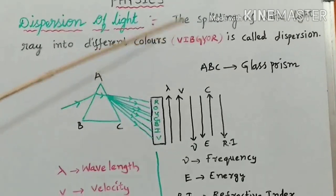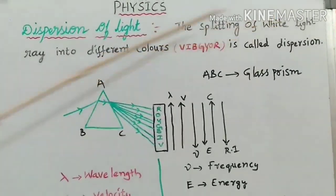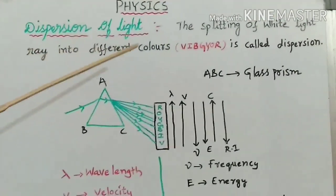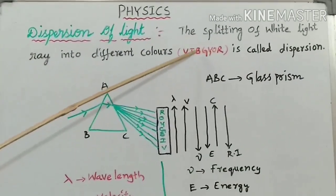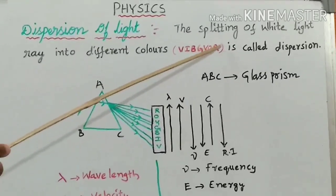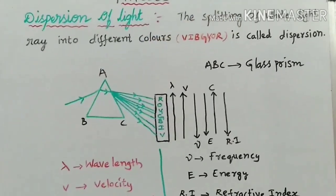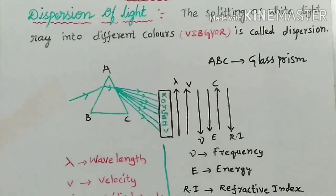Dispersion of Light: the splitting of white light ray into different colors, i.e., VIBGYOR - violet, indigo, blue, green, yellow, orange and red is called Dispersion. To understand this,